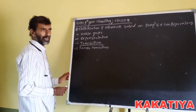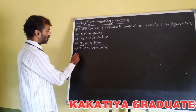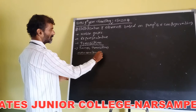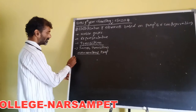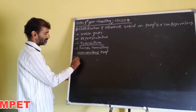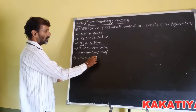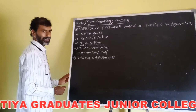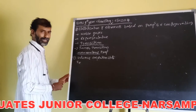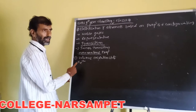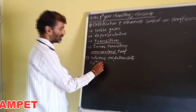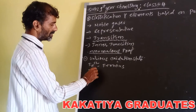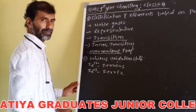Transition elements show anomalous characteristics. The first one is various oxidation states. For example, iron can exhibit a plus two oxidation state, that is ferrous (Fe²⁺), and a plus three oxidation state, that is ferric (Fe³⁺).